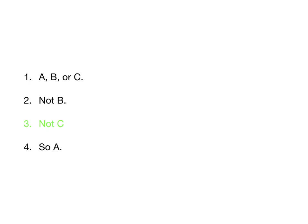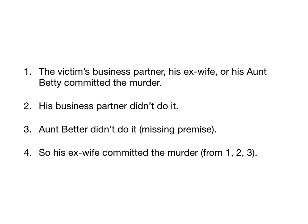We have eliminated all the possibilities except A. Maybe our detective just assumes Aunt Betty is so sweet she didn't do it — that would make him a bad detective — but we need to eliminate that possibility for this to be a valid argument. So the full argument is: the victim's business partner, his ex-wife, or his Aunt Betty committed the murder; his business partner didn't do it; Aunt Betty didn't do it — that's the missing premise — so his ex-wife committed the murder. Premise 1: A, B, or C. Premise 2: eliminate one option. Premise 3: eliminate another. The ex-wife is the only one left.